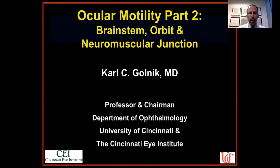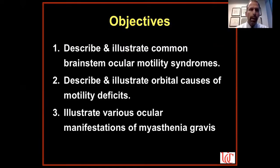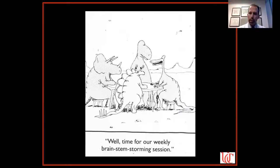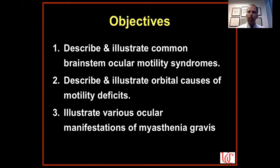In part one, we covered the ocular motility examination and mostly ocular motor cranial nerve palsies. In this part two, we'll be covering everything else. My objectives are that when we are done, you'll be able to describe and illustrate common brainstem ocular motility syndromes, orbital causes of motility deficits, and various ocular manifestations of myasthenia gravis.